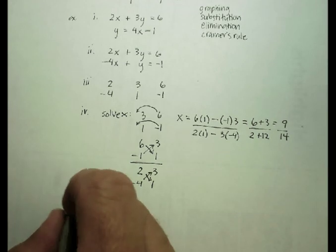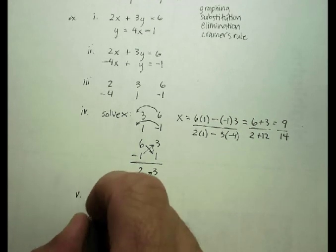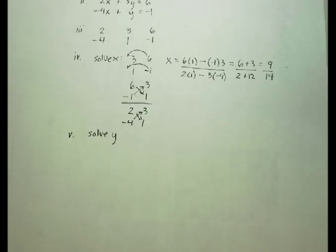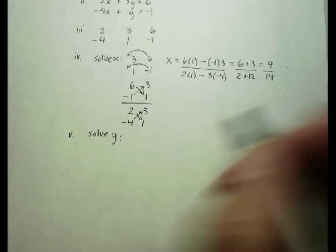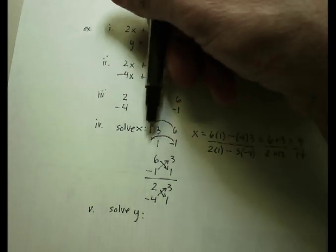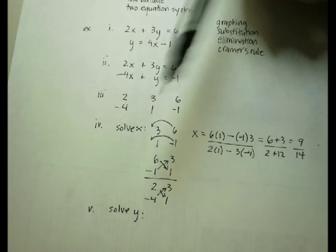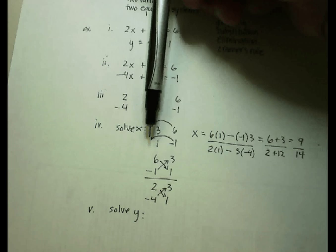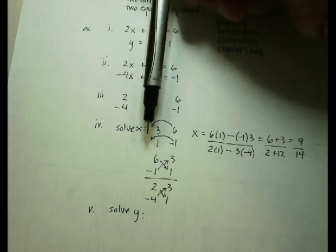Alright, so let's do the y value now. So to solve for y, you do something kind of similar. To solve for y, I'm going to cover up the y values in the matrix. So I'm going to have 2, I'm sorry, it was a little bit dark there. I'm going to cover up the y values. So it's 2 and 6, negative 4 and 1.